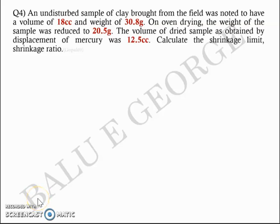Good morning. This is a numerical problem based on the shrinkage limit discussed in the previous class. An undisturbed sample of clay brought from the field was noted to have a volume of 18 cc and weight of 30.8 grams. On oven drying, the weight of the sample was reduced to 20.5 grams. The volume of the dried sample as obtained by the displacement of mercury was 12.5 cm³. Calculate the shrinkage limit and the shrinkage ratio.